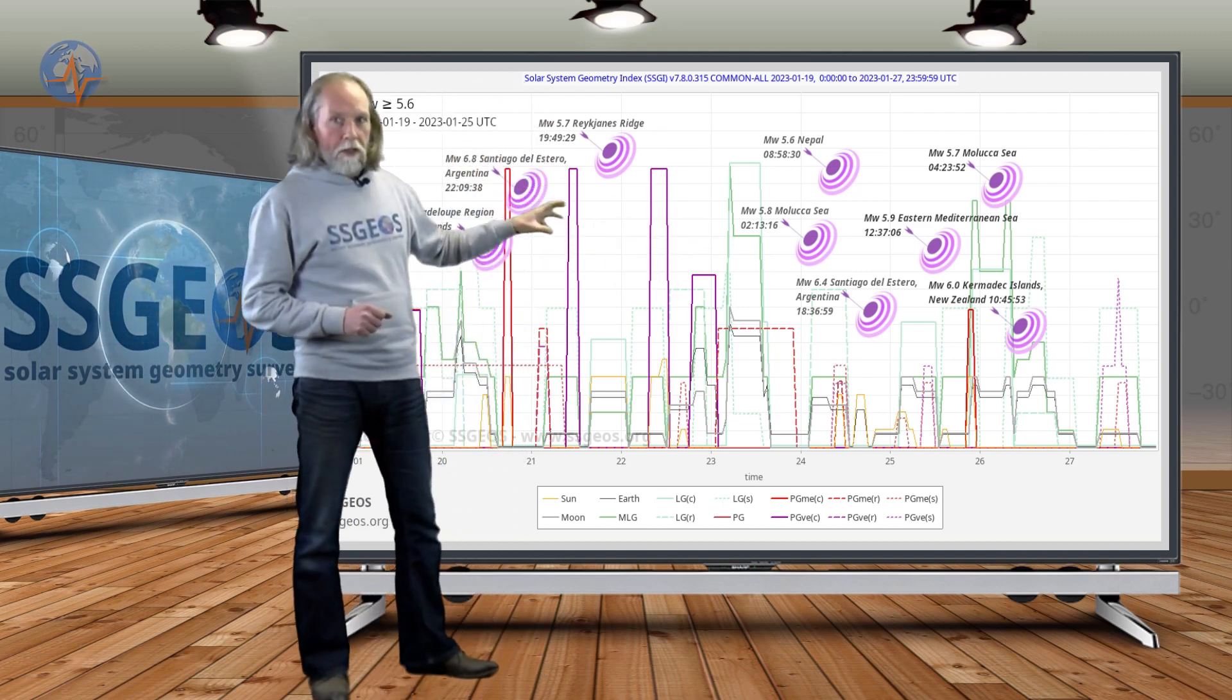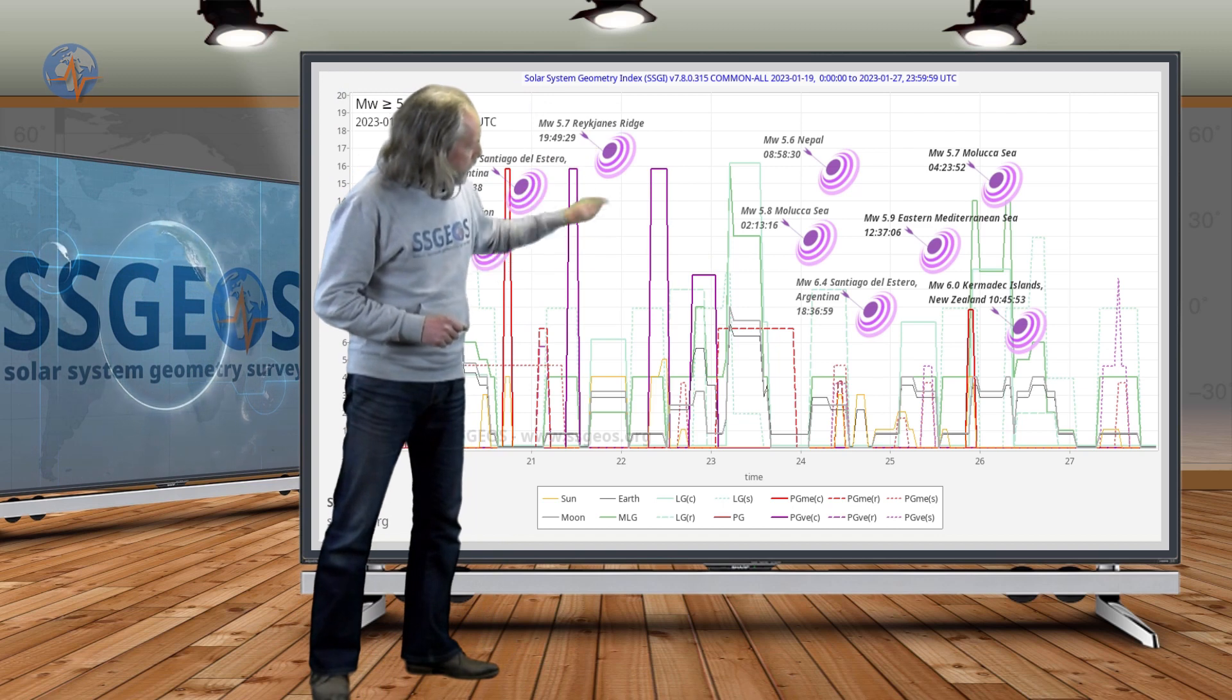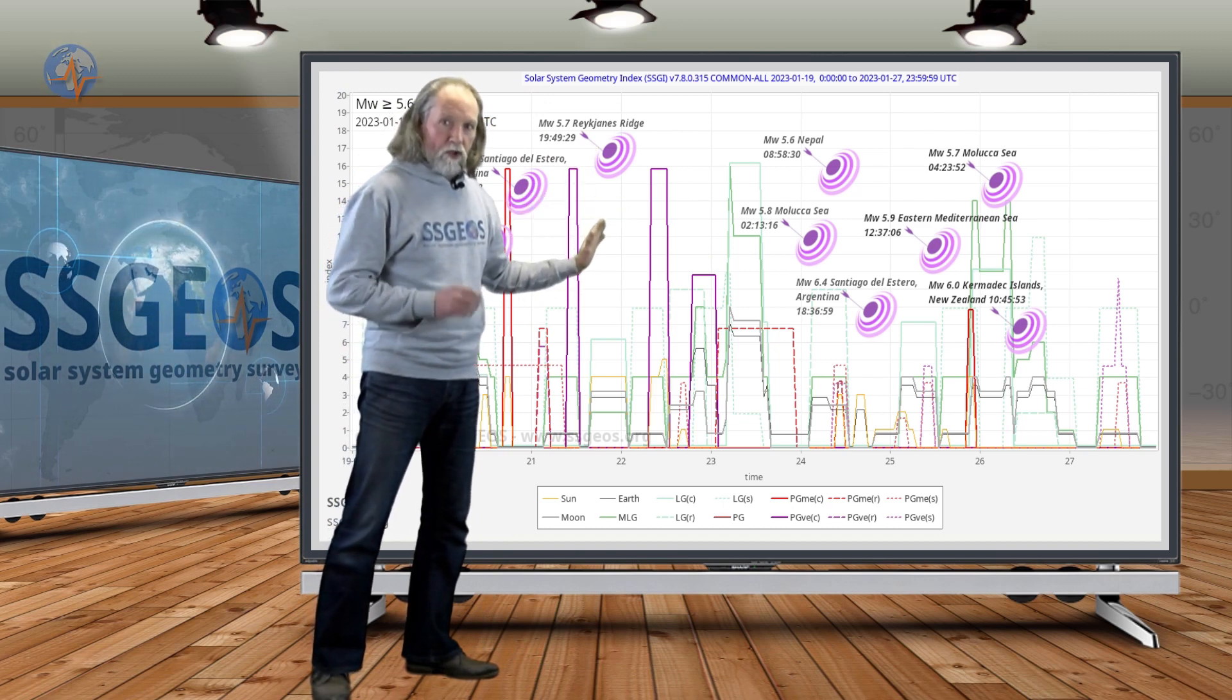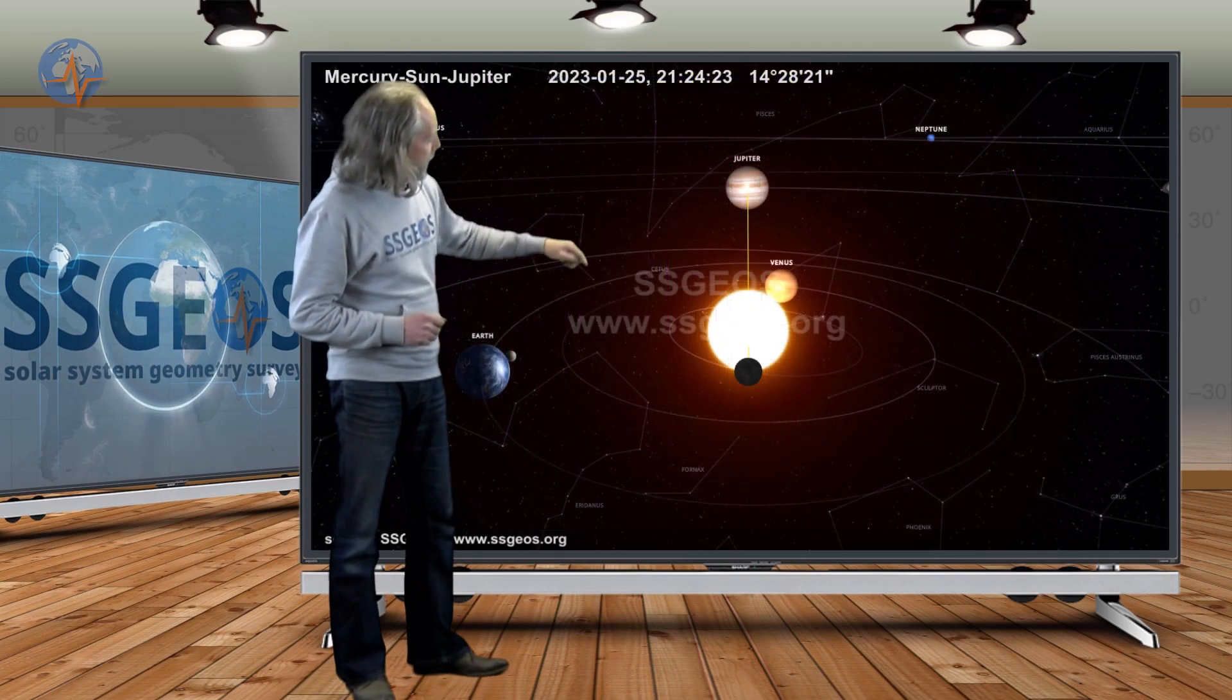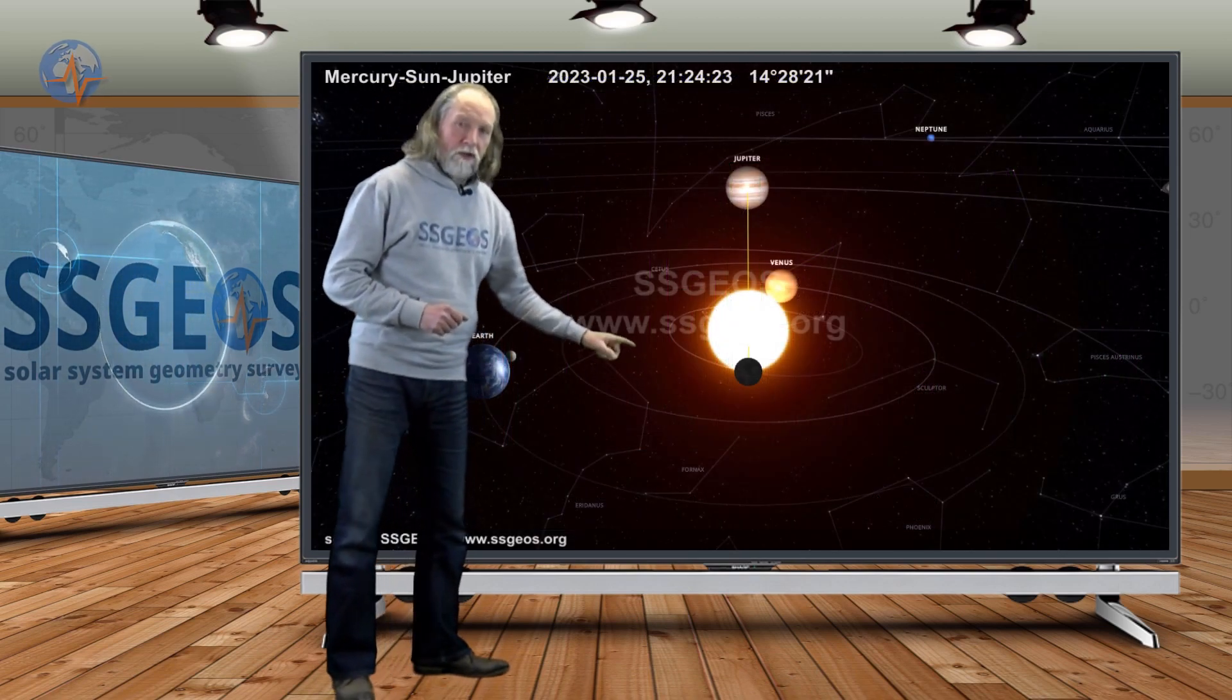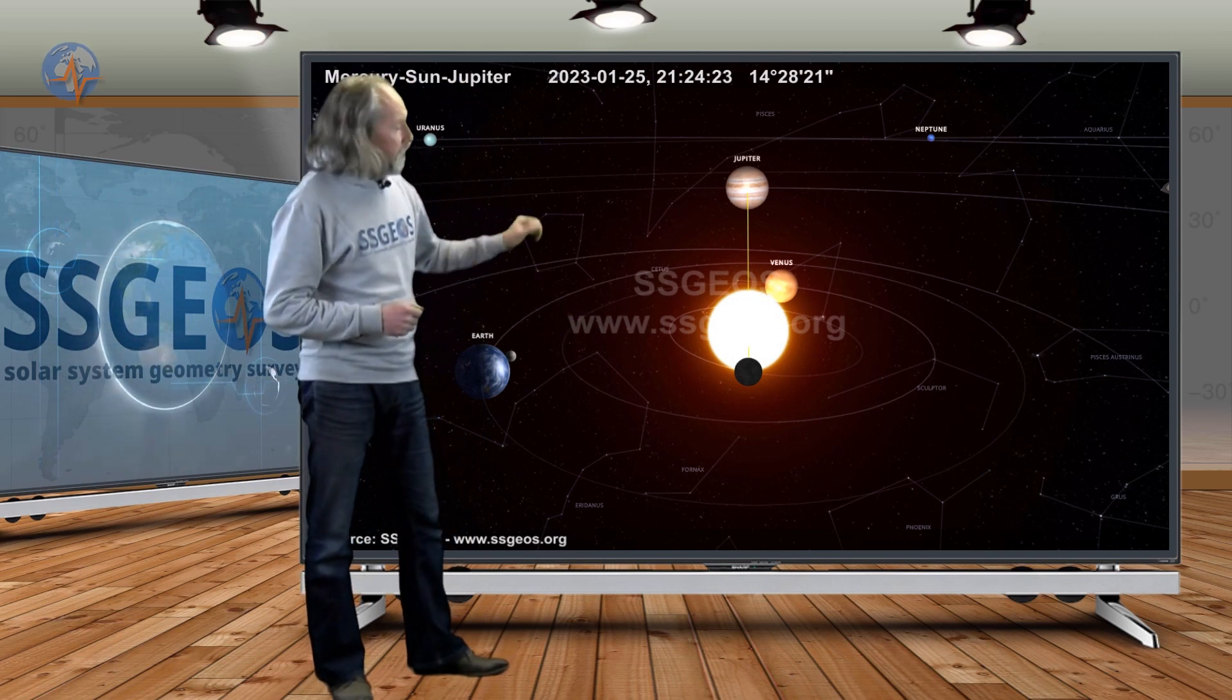We also had a planetary peak, that's the red peak that you see here, that just preceded the lunar peak. And as you may recall, we had the Mercury-Sun-Jupiter conjunction, and interestingly, this lunar peak is partly due to a lunar conjunction with Jupiter.